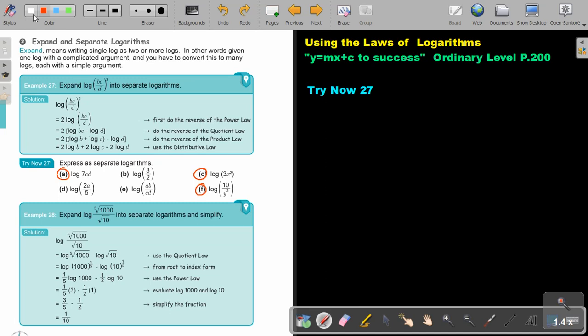Let's start. Number a. So, it's log 7cd. This will give me log 7 plus log c plus log d. That will be my final answer.